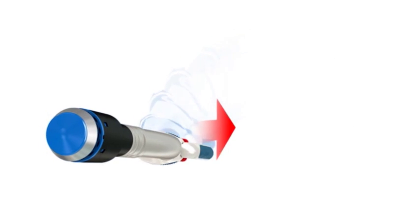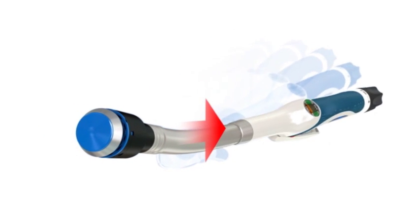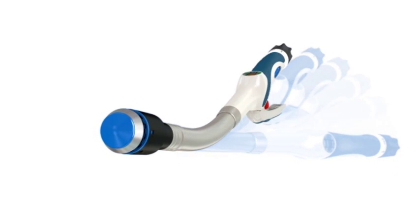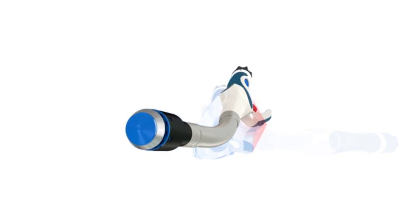To remove the device, apply rearward traction while gently rotating back and forth 90 degrees to clear the device from the anastomosis.